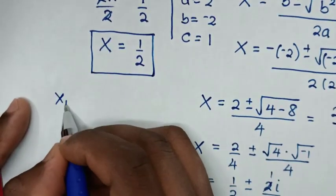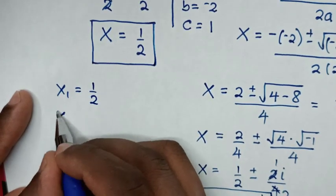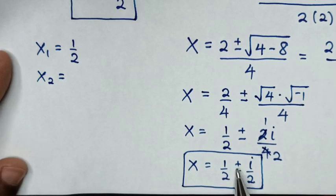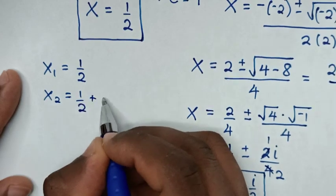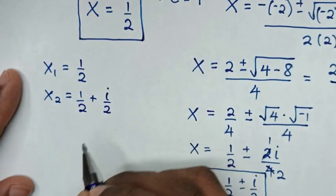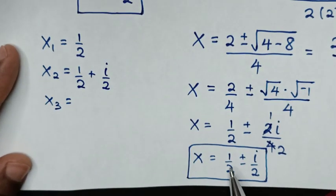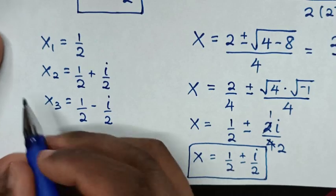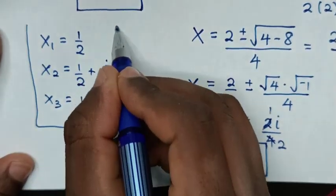So from this problem, the first value of x is 1/2. The second value of x is 1/2 plus i over 2, and the third value of x is 1/2 minus i over 2. These are all the values of x.